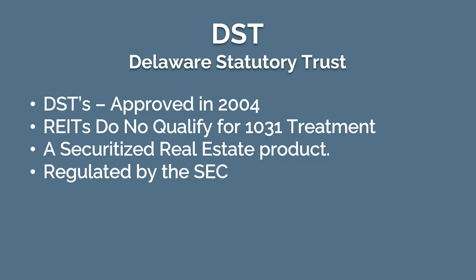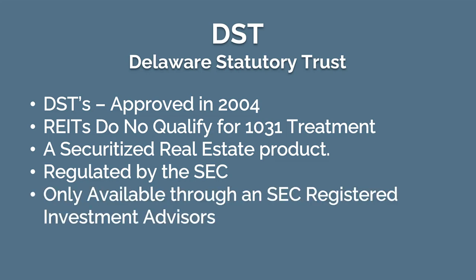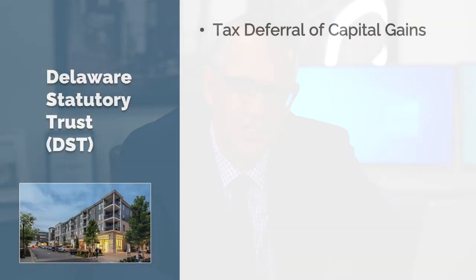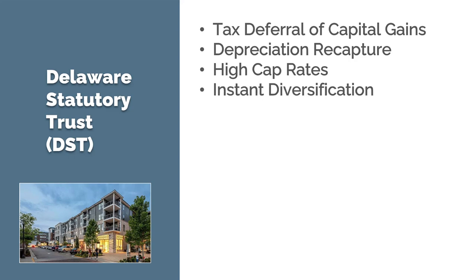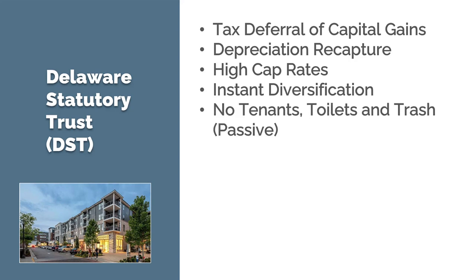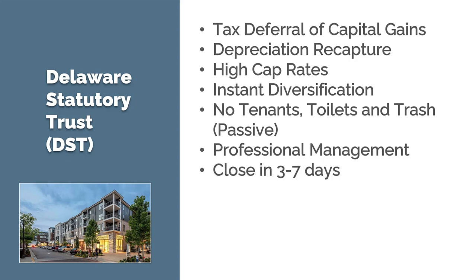A DST is securitized real estate, so it is regulated by the SEC, which means they are only available through SEC registered investment advisors. So you can sell an investment property in a 1031 exchange into a DST. You're going to get the tax deferral of the capital gains, defer the depreciation recapture, and be able to accomplish high cap rates. Instant diversification — not only in types of real estate, but across multiple states. You have no tenants, toilets, or trash to worry about or manage, so it's truly a passive investment. Professionally managed, and they can close quickly.